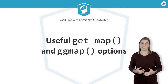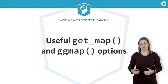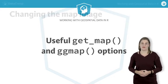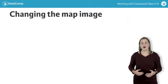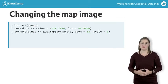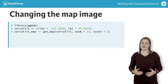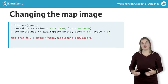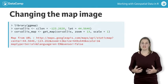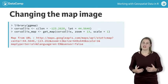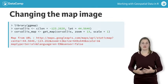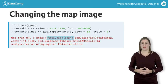Now you've seen ggmap in action, let's talk more about what it is doing and how you can alter its output. Here's the code you used to grab a map of Corvallis. You probably noticed when you ran getmap, it printed some messages to the console. These messages give you an idea of what getmap is doing — it's querying the Google Maps API and asking for a terrain map.